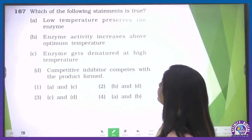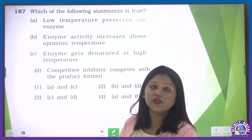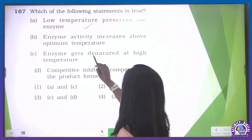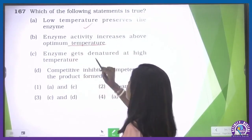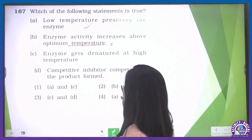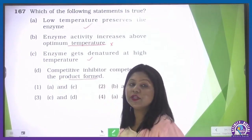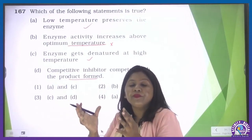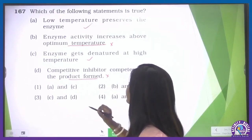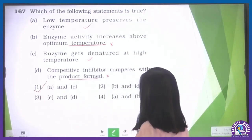Which of the following statements about enzymes is true? Low temperature preserves the enzyme — yes, at low temperature enzymes become inactive but are not destroyed — this is correct. Enzyme activity increases above optimum temperature — incorrect; above optimum temperature, enzyme activity decreases and the enzyme gets denatured. Enzyme gets denatured at high temperature — also correct. Competitive inhibitor competes with the product — incorrect; competitive inhibitor resembles the substrate, not the product. So A and C are the correct options.